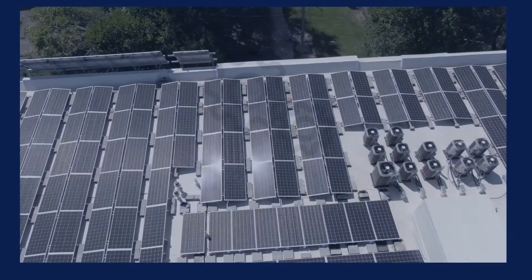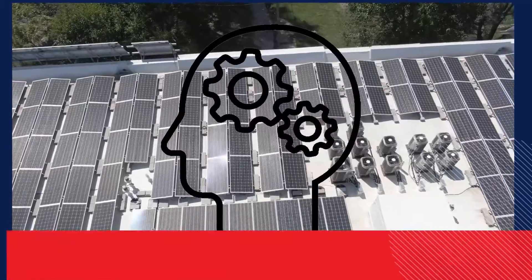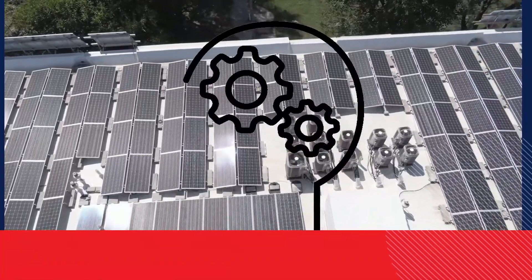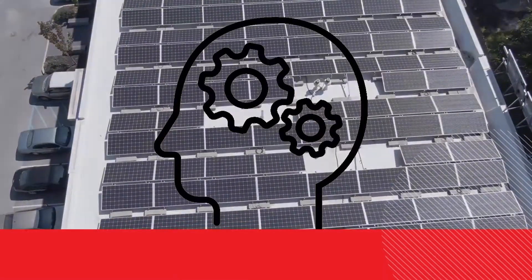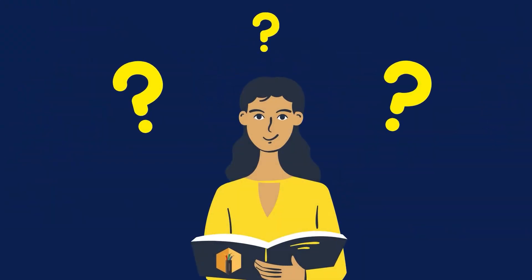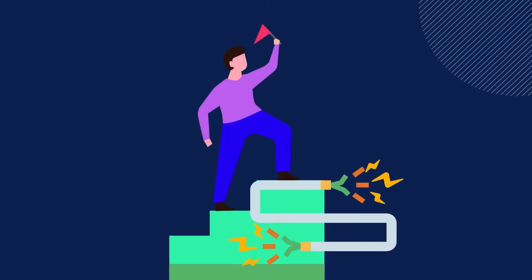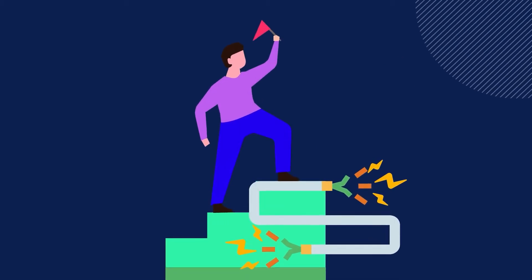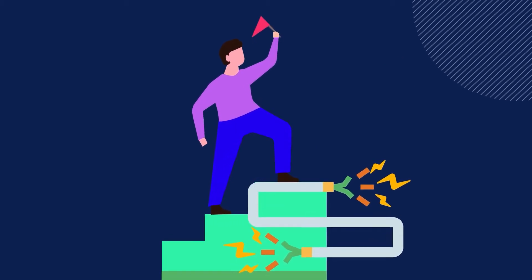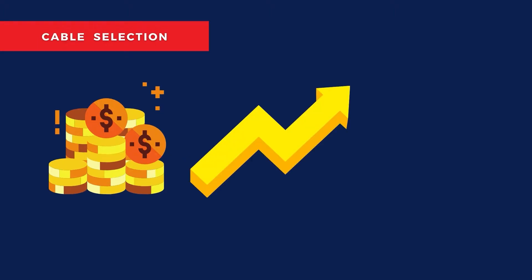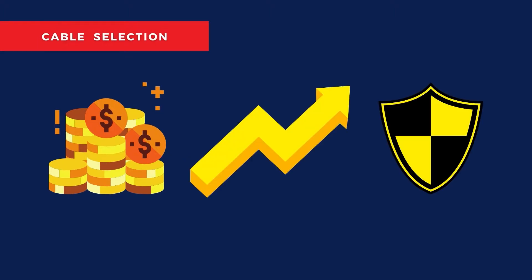Cable selection is a crucial engineering challenge in solar PV design. It is a complicated process and is often considered one of the biggest hurdles for solar designers and installers. Cable selection has major implications in the overall cost, performance, and safety in the design of PV systems.